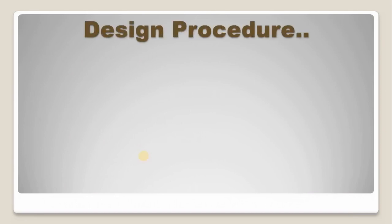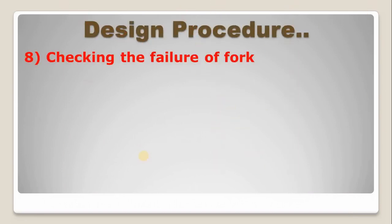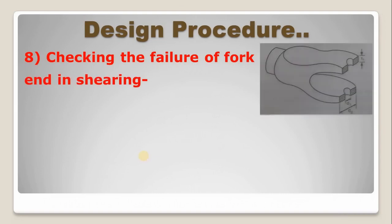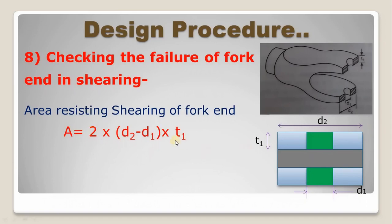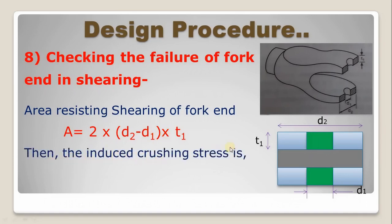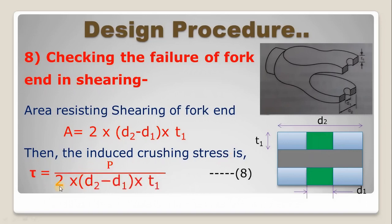Step 8 is checking the failure of fork end in shearing. It is in double shear, so the area is 2 into (D2 minus D1) into T1. The induced shear stress is tau equal to P divided by 2 into (D2 minus D1) into T1 — equation number 8.